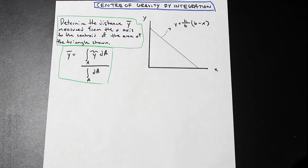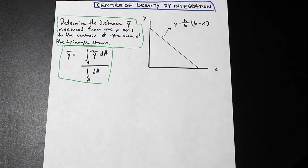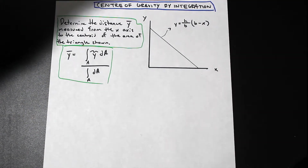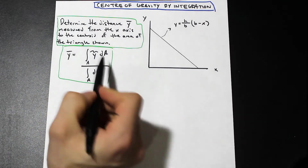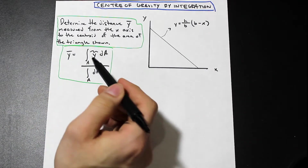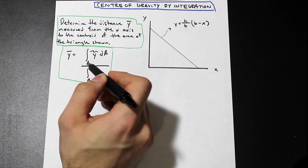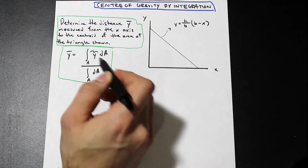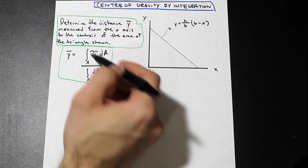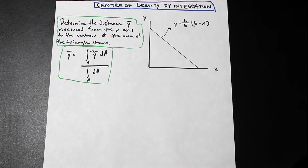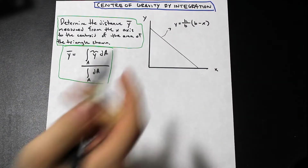So this area here in this triangle is what we're asked to find. There are just a few steps — if you follow them, it's not too hard, but the integration can be tricky depending on the shape that you get. Maybe you're going to get a curve or something tricky. So what I've written here is the formula for y bar: y bar is equal to the integration of y tilde dA over the integration of dA. I'll explain what these elements are, but first we need to draw a couple of things on the graph and label them.